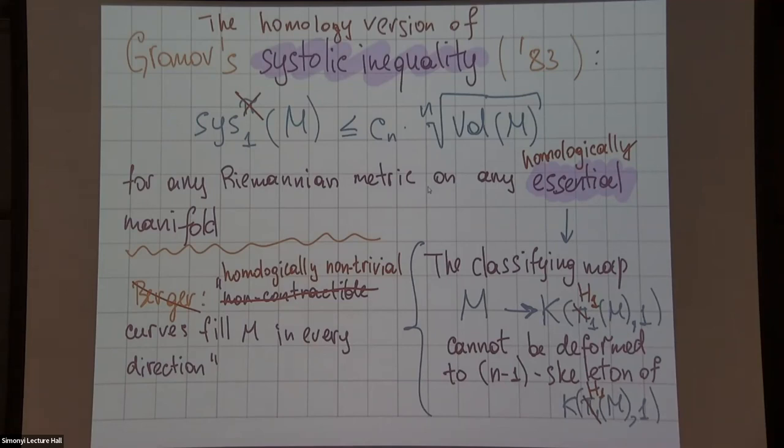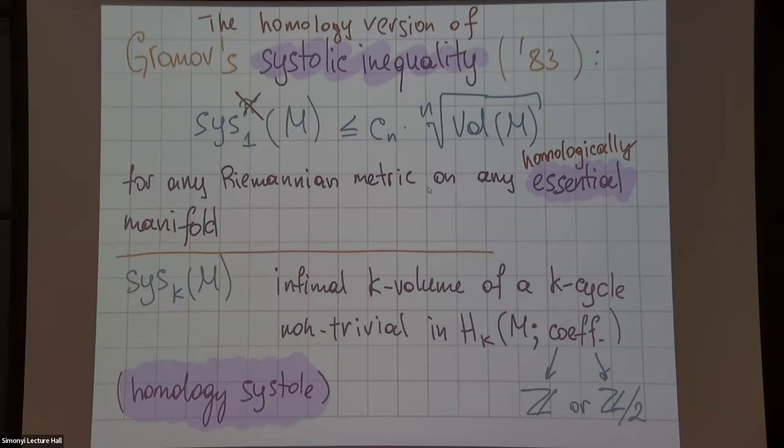The k-dimensional homology systole is defined as the infimal k-dimensional volume of the cycle, or you can think of a submanifold if you are not familiar with the cycle, non-trivial in homology. Again, you can take different coefficients and you'll get different results, different numbers.